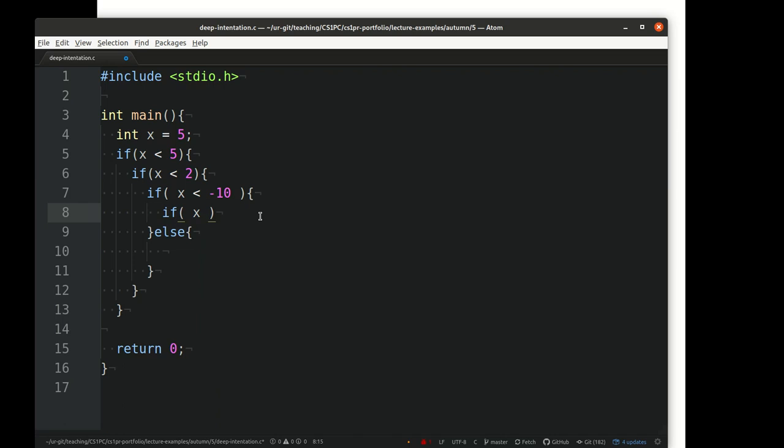But this code becomes more and more hard to manage and tough to read. Let me say x smaller than minus 20 or something. Really difficult. So try to avoid this. I would recommend not to go deeper than 2 to 3 levels of indentation at most when you write some code.